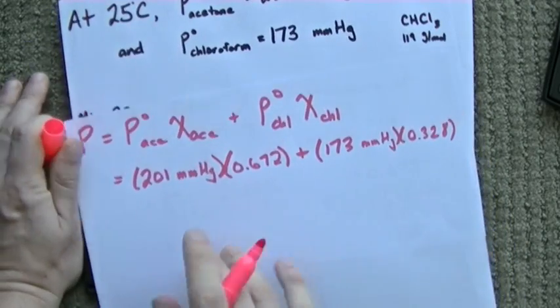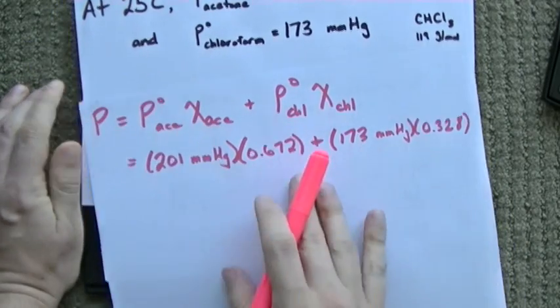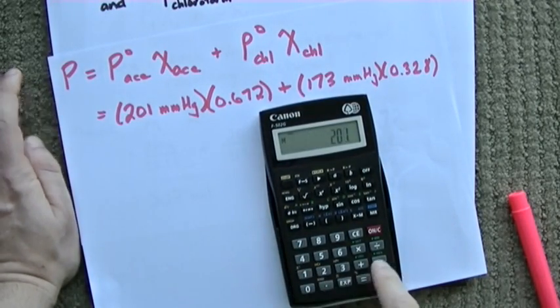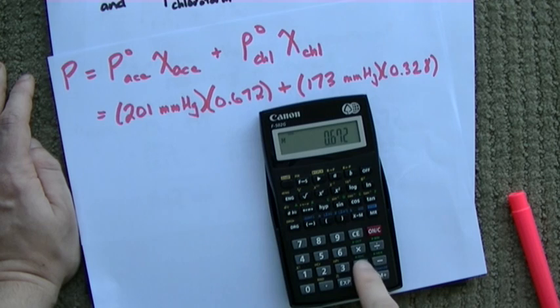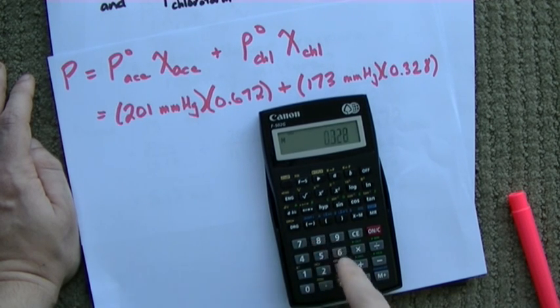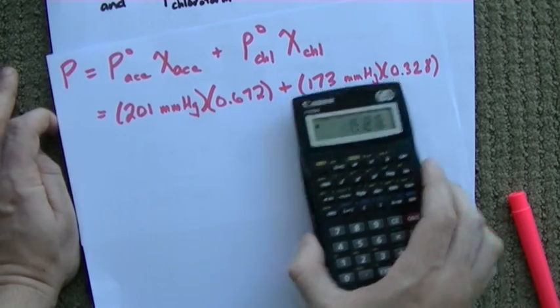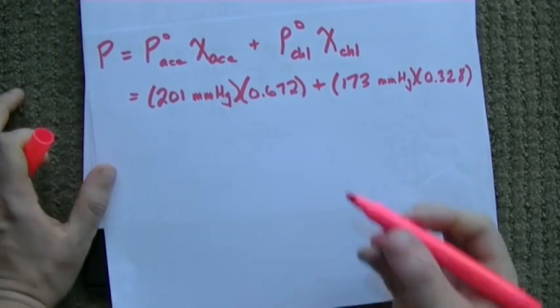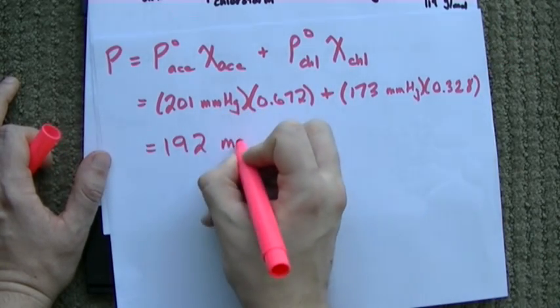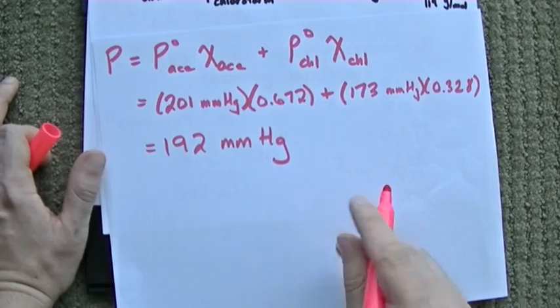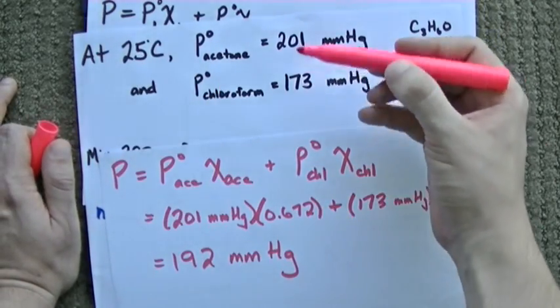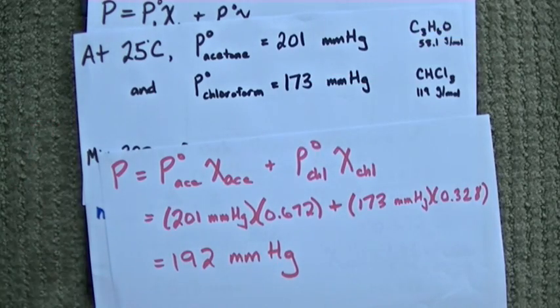Mole fraction has no units. I'm showing my units in full right here, right now for you. So, 201 times 0.672 plus 173 times 0.328 gives me 191.8, 192 if I'm going to use significant figures. So, the vapor pressure of this mixture is 192 mmHg, which honestly makes sense because it's in between the vapor pressures of the two things.